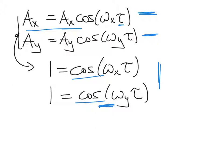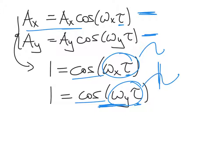For the periodic condition to hold, both equations must be true at exactly the same time tau. The argument in both cosines needs to represent an integer number of oscillations. We need to have undergone an integer number of oscillations along x and an integer number along y. We could also go through a half-oscillation along y when we go through an integer number along x — what's important is that the number of oscillations in both directions has some rational relationship, meaning they have to be related via an integer.